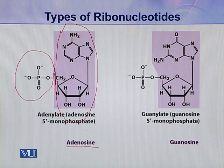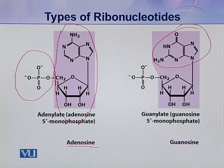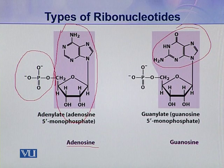Moving to the second type of ribonucleotide present in nucleic acids — here the nitrogenous base is guanine. In this coloured portion, guanine joins with a pentose sugar and they make a guanosine.